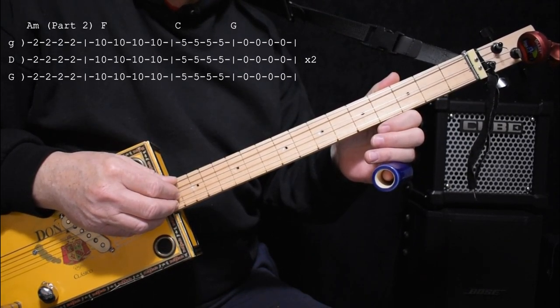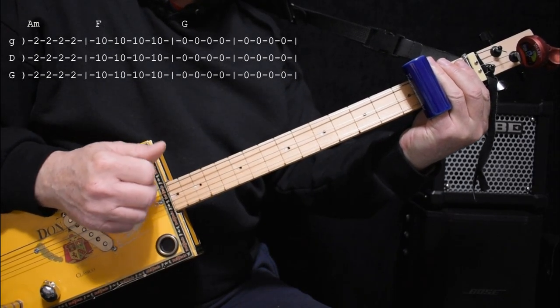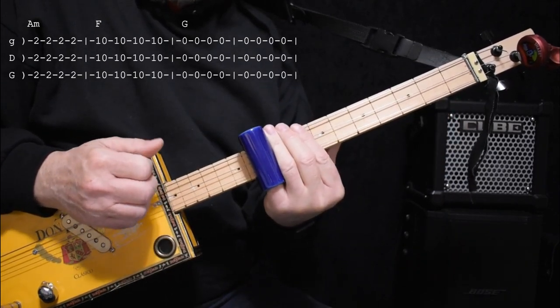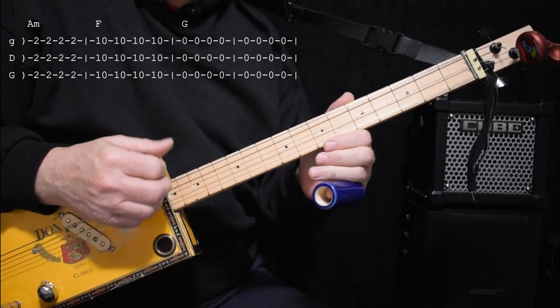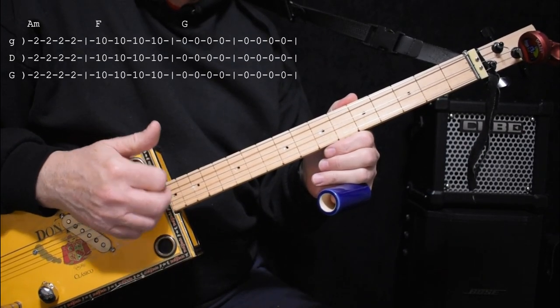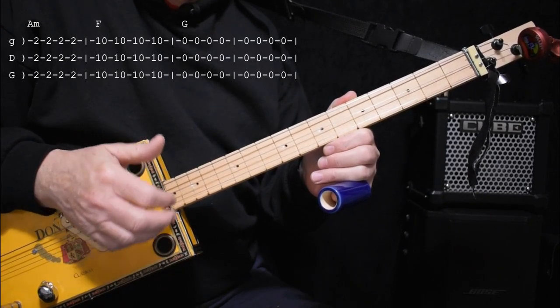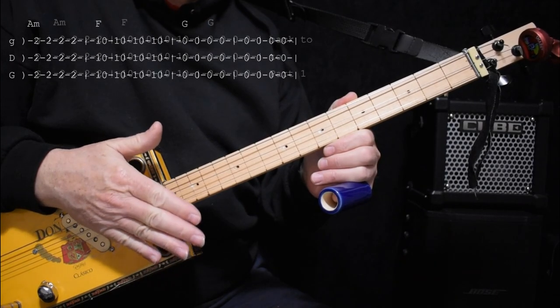Does that one more time. And then it does a slight variation, A, F, G, and G again. So that'd be actually your third go-round.